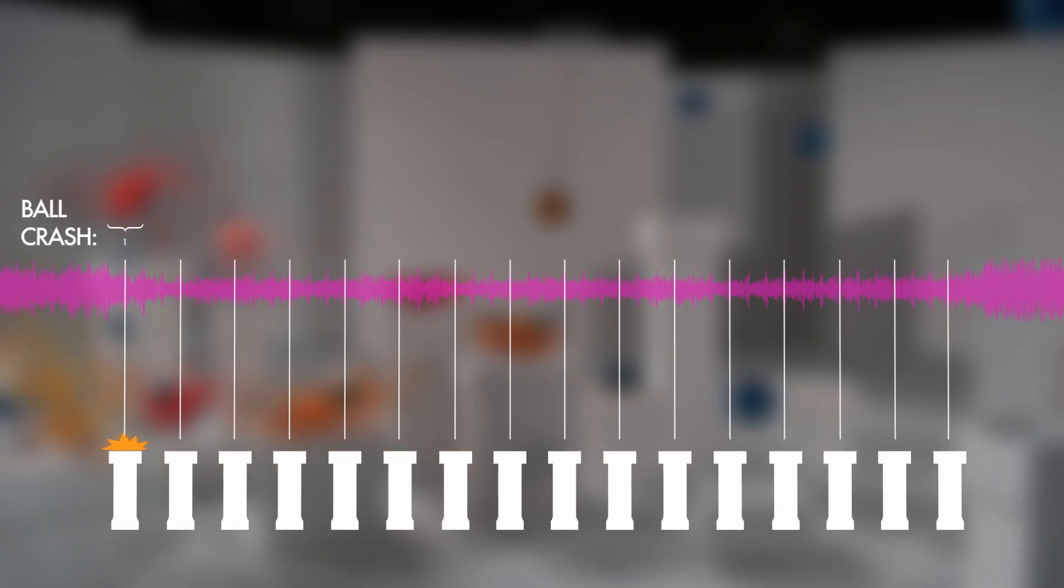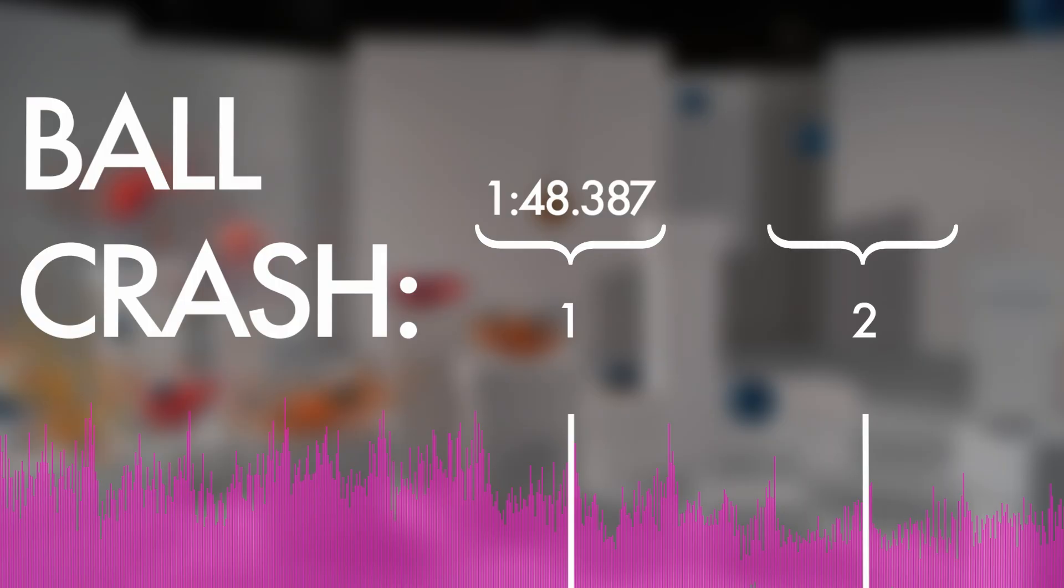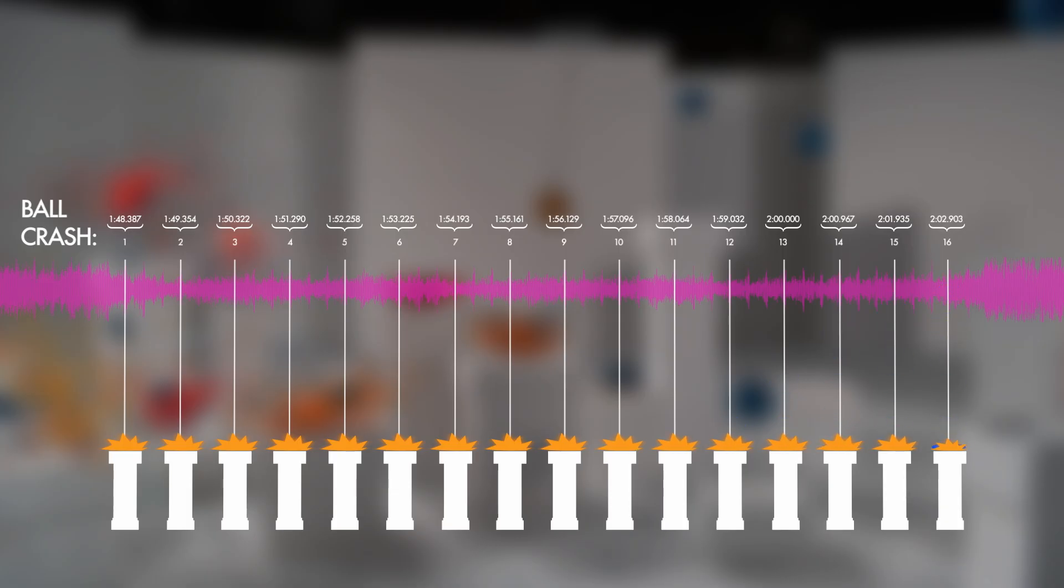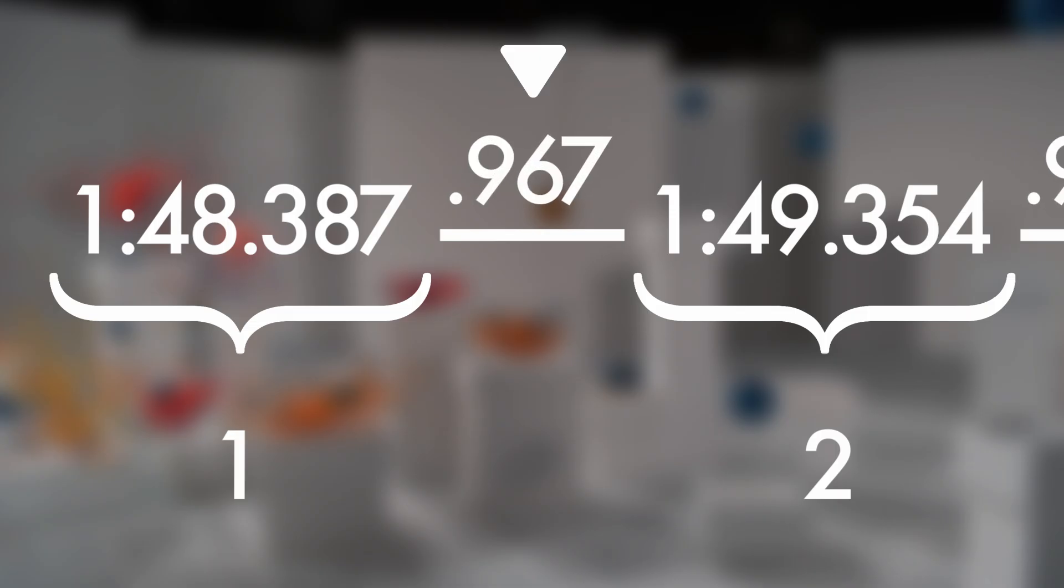We've got ball crash 1 at 1 minute 48.387 seconds, and ball crash 2 is 1:49.354, and so on, all the way up to 16. Now we also know that these are all evenly spaced notes, right? It's an even rhythm going dot dot dot dot. So if we compare the times here we should find that the amount of time elapsed between each hit is the same. Sure enough, we see that each beat is in fact 0.967 seconds apart.